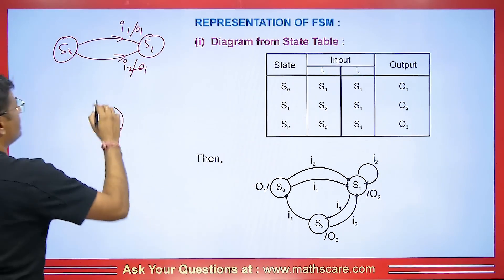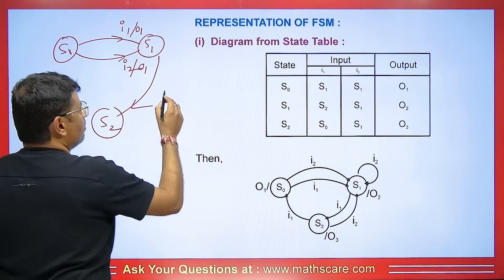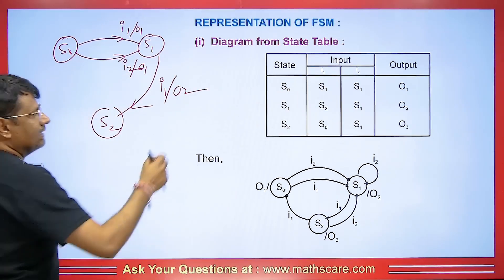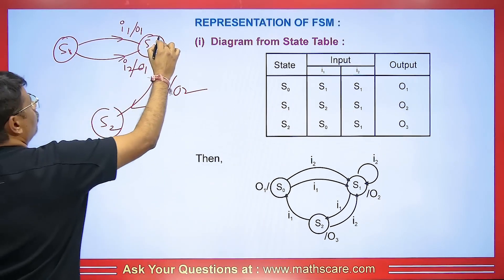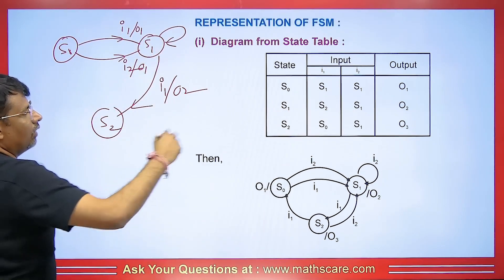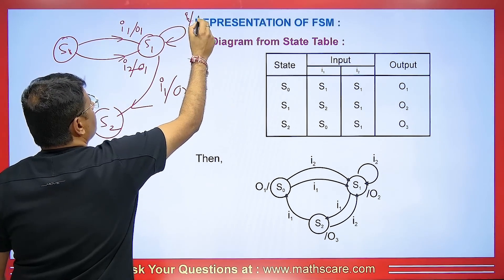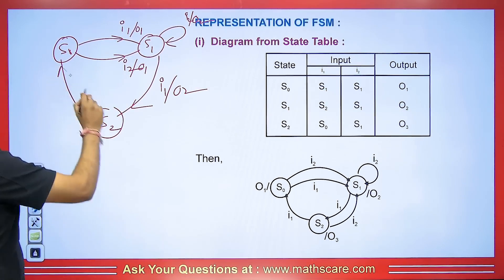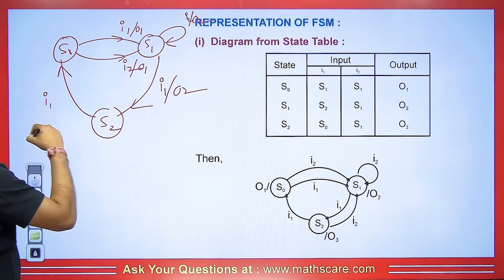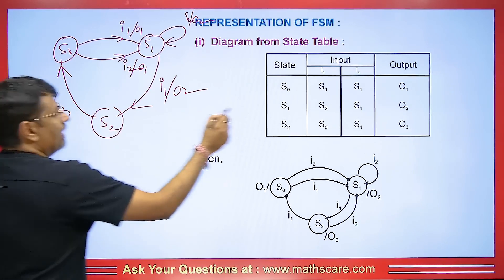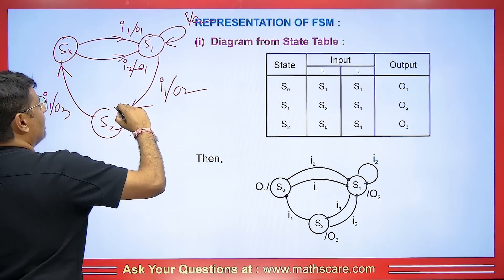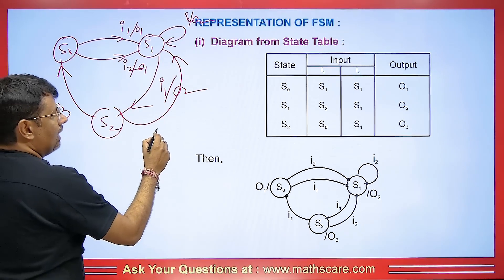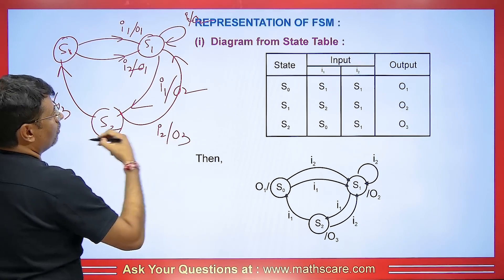S1 is going to S2. State 1 is going to state 2. The input here is I1 and the output is O2. When S1 goes to itself, it becomes a self-loop — the input is I2 and the output is O2. Now S2 goes to S0: the input is I1 and the output is O3. S2 is also going to S1 with input I2 and corresponding output O3.